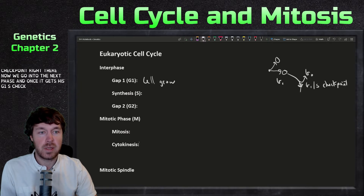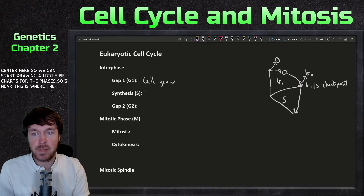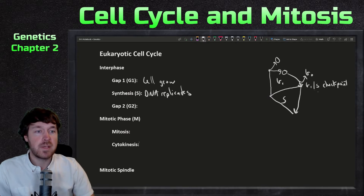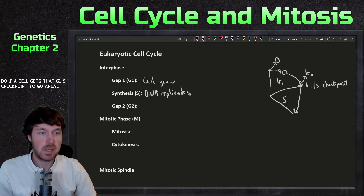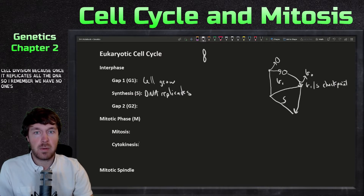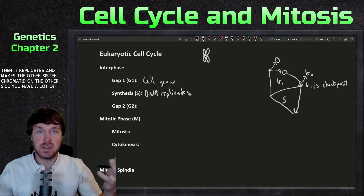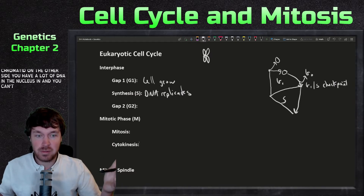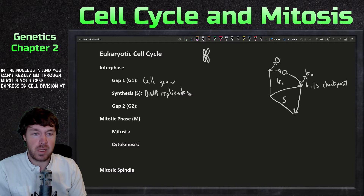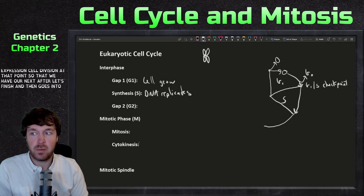Once the cell gets the go-ahead at the G1/S checkpoint, it replicates its DNA in the S phase — DNA synthesis. If a cell passes that checkpoint, it's committed to cell division. One sister chromatid replicates to make the other, and now there's a lot of DNA in the nucleus. After S phase finishes, the cell moves into G2.